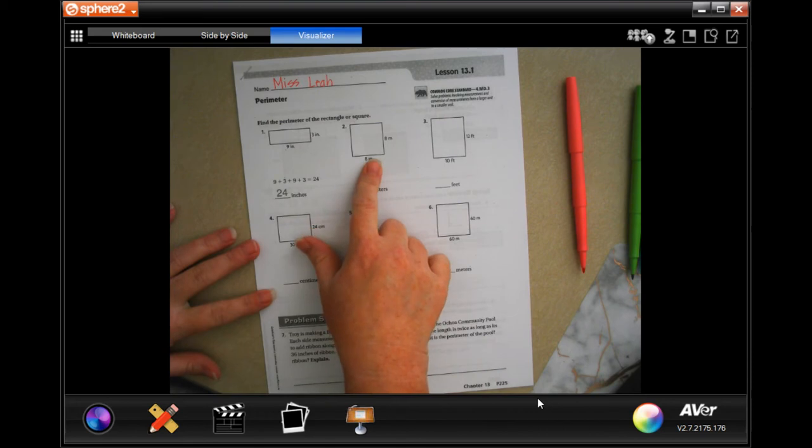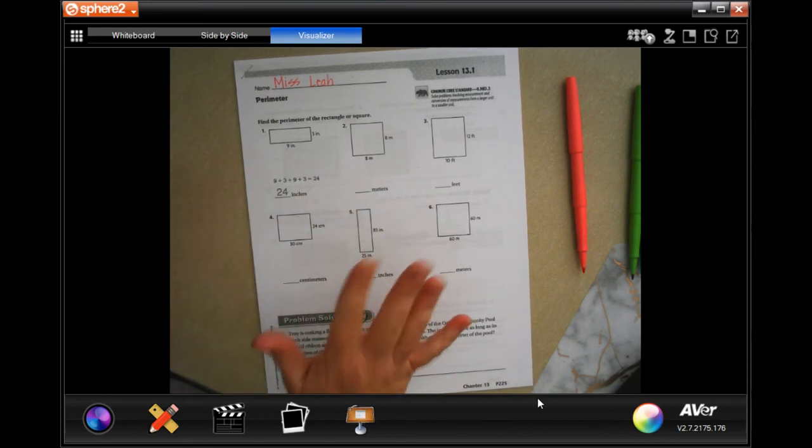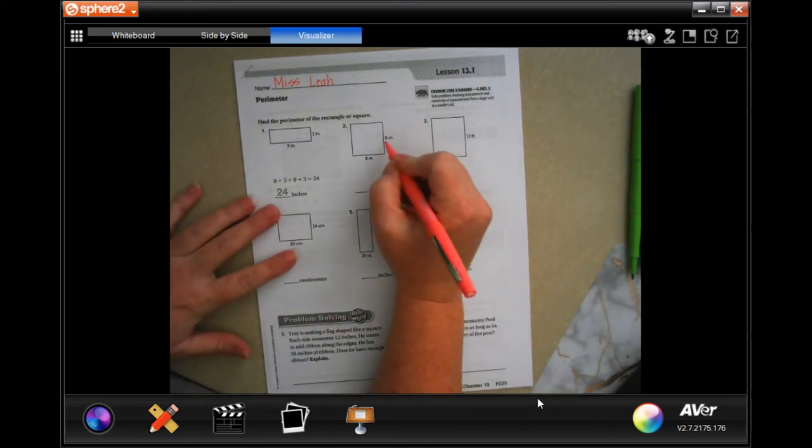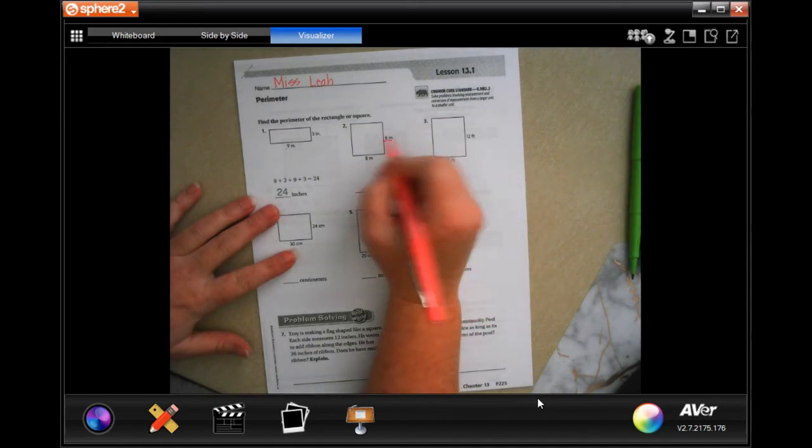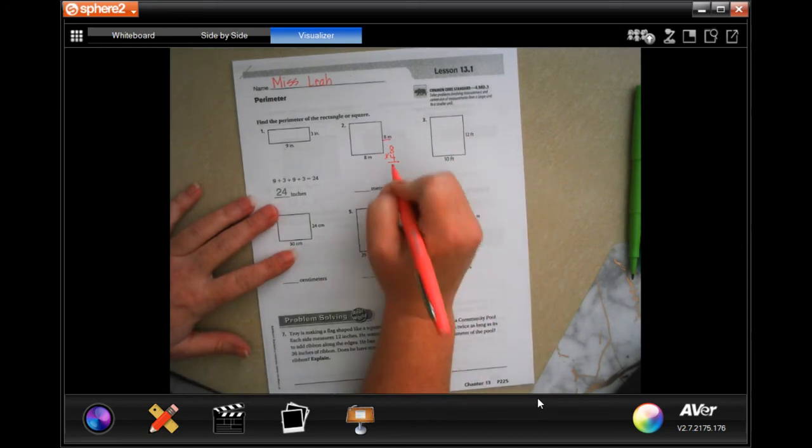And when you have a square, it's easier because the square, they're the exact same on all sides. So if 8 is on all sides and there's 4 of them, then we're just going to do 8 times 4. So that's going to get us 32, 32 meters.